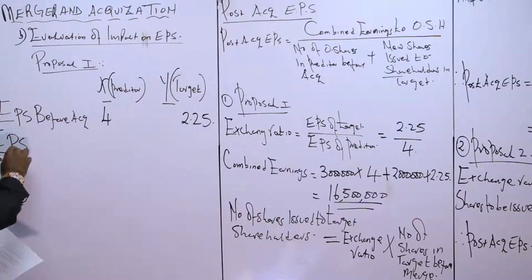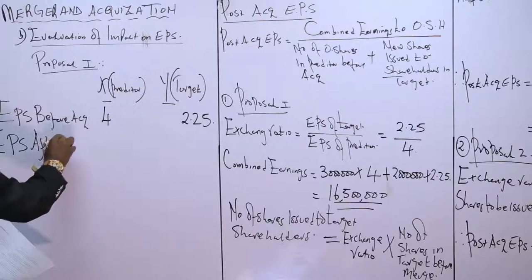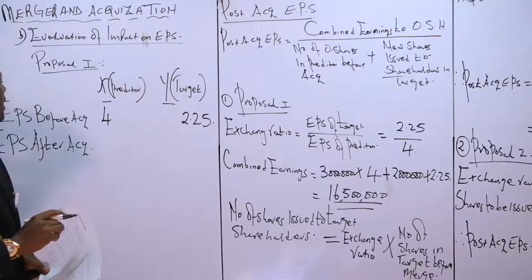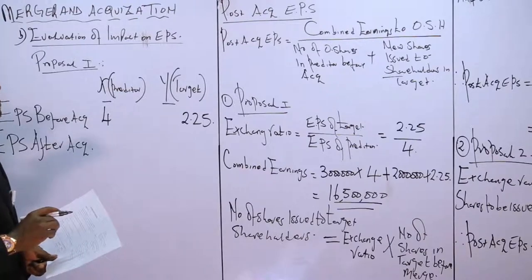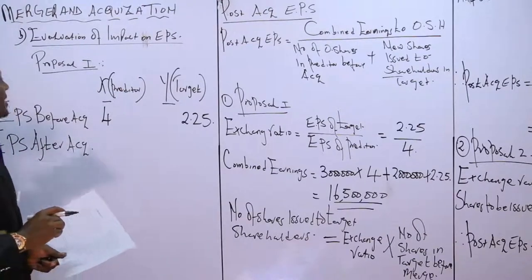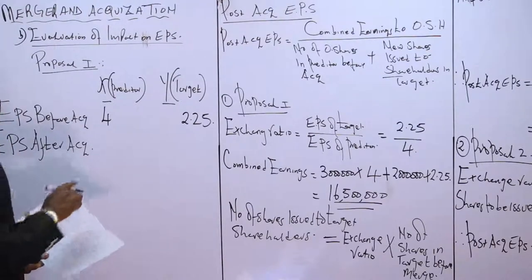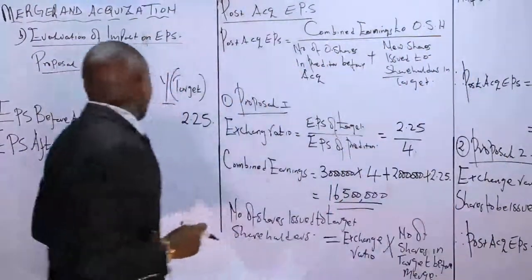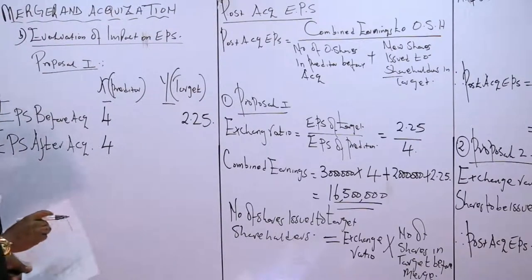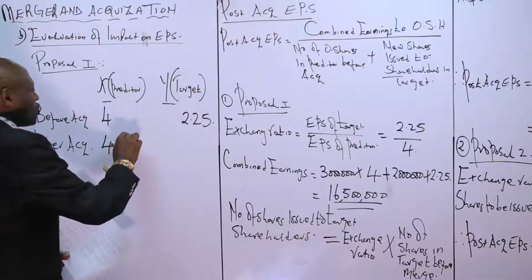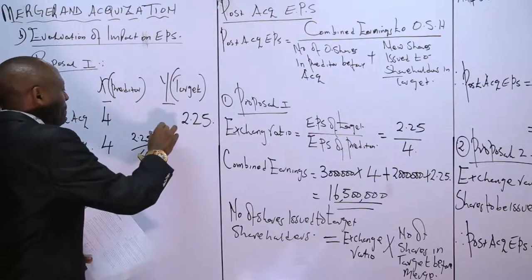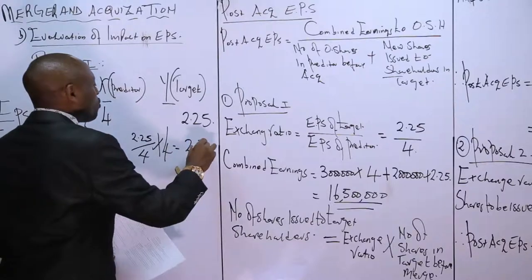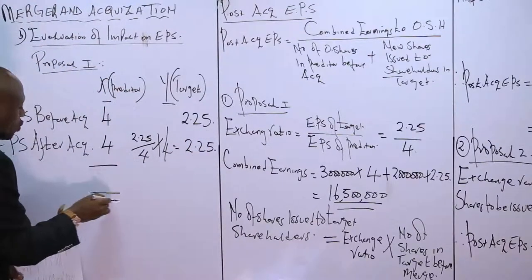Now we look at the EPS after acquisition. As mentioned in our last lesson, the post-acquisition EPS for the predator shareholders remains four shillings. For the target shareholders, it is based on the exchange ratio: two point two five divided by four, multiplied by the post-acquisition EPS, which gives two point two five shillings.